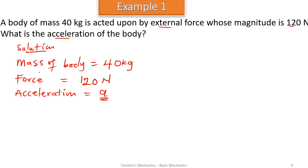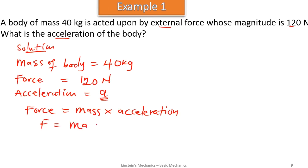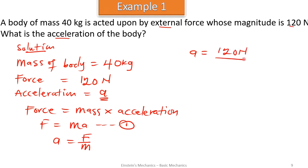What is the link between mass, force, and acceleration? We know that force is equal to mass times acceleration, so F equals ma. That's our equation. To find acceleration, we make it the subject: a equals force divided by mass. Substituting our values, acceleration equals 120 newtons divided by 40 kilograms, giving us 3 meters per second squared.